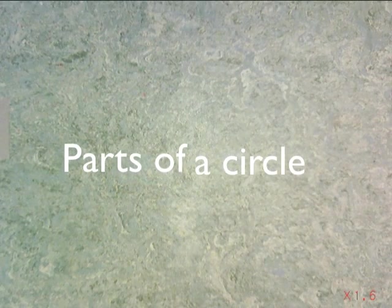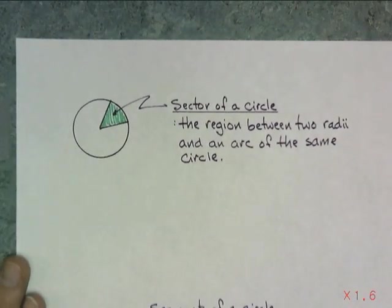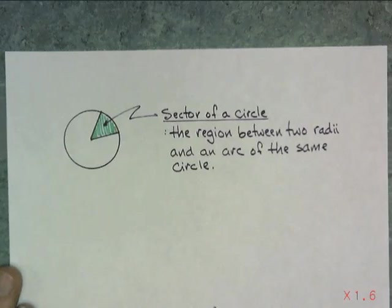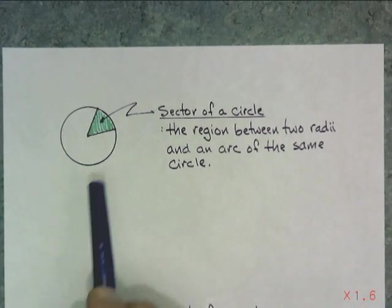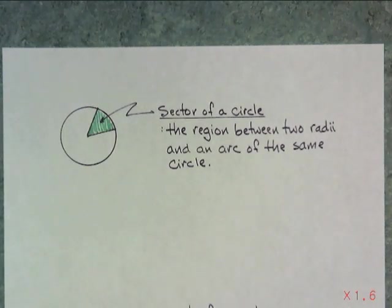Now that we know the area of a circle, we need to talk about parts of the area. There are a couple parts of a circle which have vocabulary terms. First off, there is a sector of a circle. A sector of a circle is, as my picture shows, the region between two radii and an arc of the same circle. That little pizza pie piece that you can see right there, that is a sector.